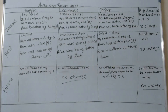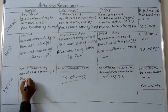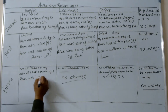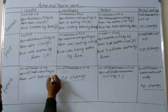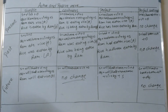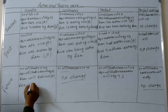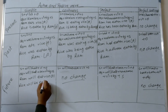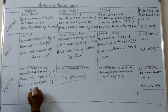In simple future, Ram will eat rice. This is active voice. Now we change it to passive voice: rice will be eaten by Ram.